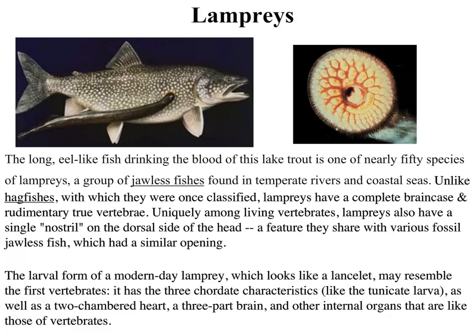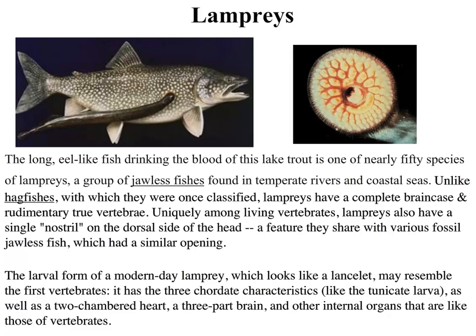One group is the lampreys — these guys have a face only a mother could love. They are parasitic. The picture on the right shows what their face looks like — those are all tiny little teeth. The way it works is they attach to another fish, burrow into the side of the fish, and start sucking out blood and everything else they can get. It's a gross way to make a living, but it works for them. They are considered a problematic species — if fish have too many of them, the fish could potentially die.